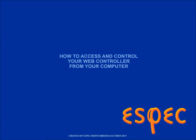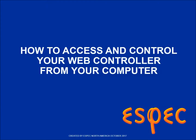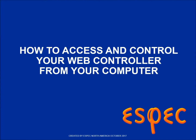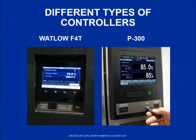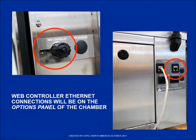This video will teach you how to access and set up the web controller connected to your ESPEC environmental chamber. Different chambers have different types of controllers for adjusting temperature and humidity conditions. It is possible to have a controller and not have a web controller. If you have a web controller, you will have an Ethernet connection labeled web controller on the options panel on the side of your chamber.